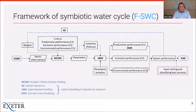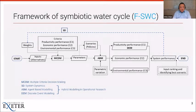The framework is called FSWC, which stands for Framework of Symbiotic Water Cycle, but it doesn't necessarily need to be applied only to water cycle symbiosis — it can apply to most industrial symbiosis contexts. This figure shows the modeling process. You can see the framework consists of four modeling approaches: MCDM, SD, ABM, and DEM. These four approaches are all very common in the operational research field.